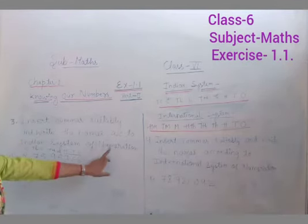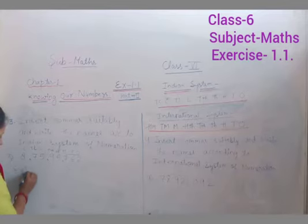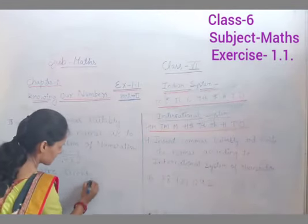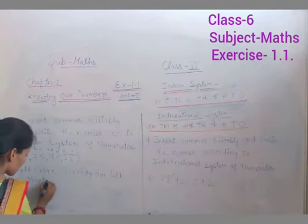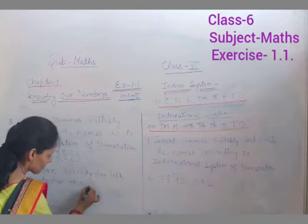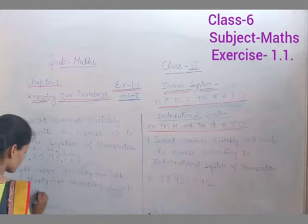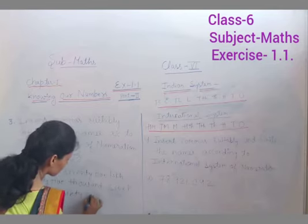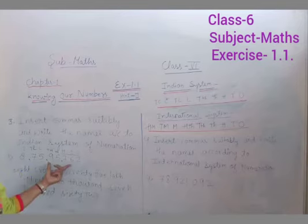Toh humne commas insert kar liye. After that hume inhein numerals mein likhna hai, Indian system ke according. Eight crore 75 lakh, 95 thousand, seven hundred sixty-two. Toh humne inhein isko Indian system ke according likh liya hai. Eight crore 75 lakh, 95,762, and commas bhi paste kar liye hai.